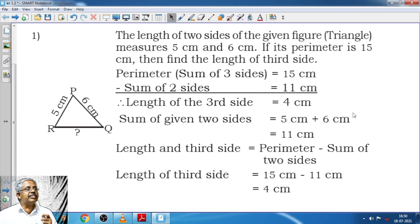So here the sum says perimeter of the given three sides is equal to 15 cm and we are supposed to subtract sum of those two sides which we knew. That is 5 plus 6 which is 11 cm. And therefore the length of the third side is going to be 15 minus 11 which is just 4 cm.